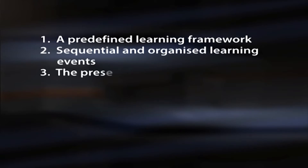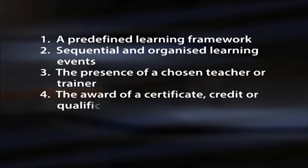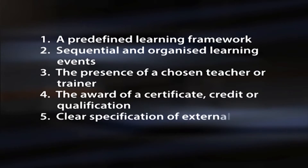The five distinguishable characteristics of formal learning include: a predefined learning framework, sequential and organized learning events, the presence of a chosen teacher or trainer, the award of a certificate, credit or qualification, and clear specification of external outcomes.